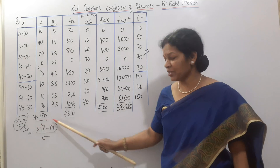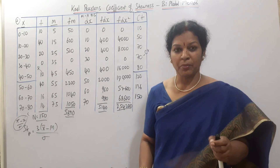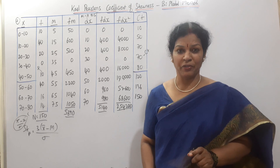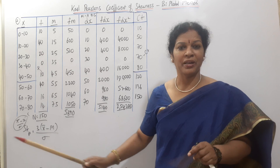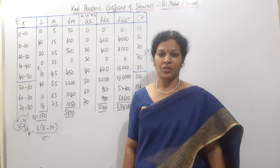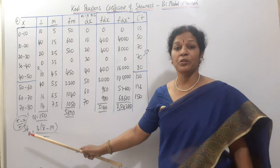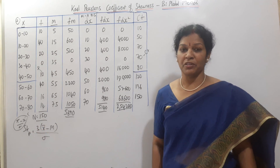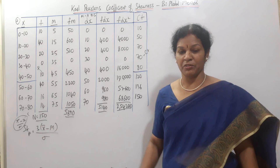In this case, we write a sentence: 'In the given problem, mode is ill-defined. Hence, we use the SKP bimodal formula.' The formula is: SKP equals 3 into x-bar minus median divided by standard deviation. We need to find x-bar, median, and standard deviation.